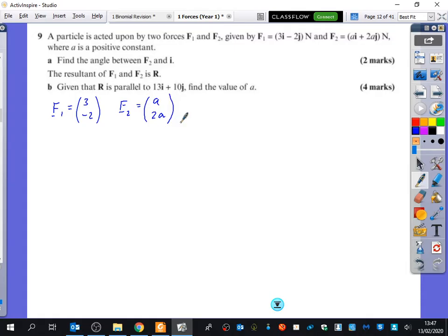So the first part says find the angle between F2 and I. So I'm going to start off by drawing the origin, where I'm going to pretend that I'm drawing the points from, and I'm going to draw what F2 is. Now F2 is A to the right, because it's A here, and it's 2A up.